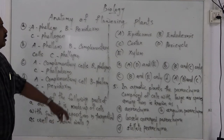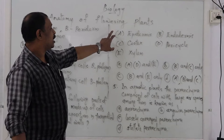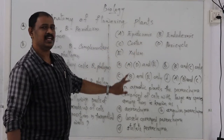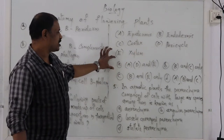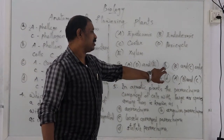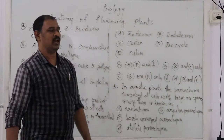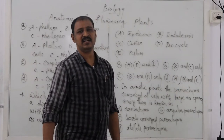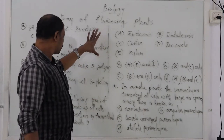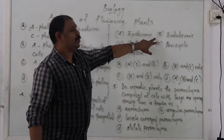This is the suberin deposition question for dicot root. The correct answer involves the endodermis. The endodermis is the inner layer of the cortex where suberin deposition occurs.